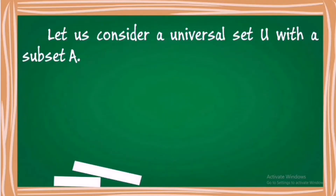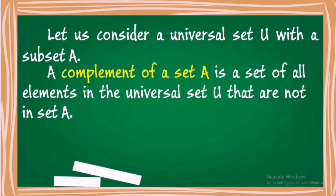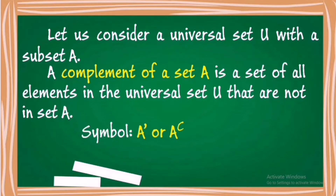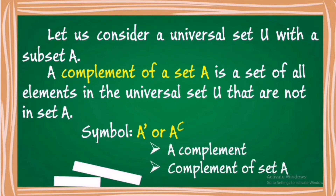Let us consider a universal set U with a subset A. A complement of a set A is a set of all elements in the universal set U that are not in set A. The symbol for the complement of a set A can be A prime or A superscript C, read as A complement or complement of set A.